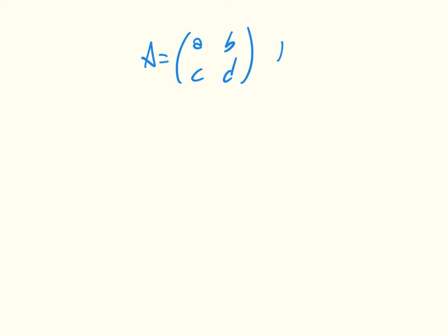We're going to use this matrix to define the fitness of our population. So as an example, imagine we have a population with seven individuals, and four of them are of the first type and three of them are of the second type.